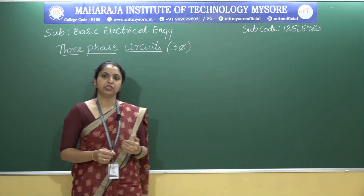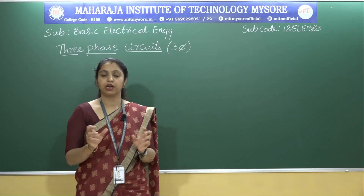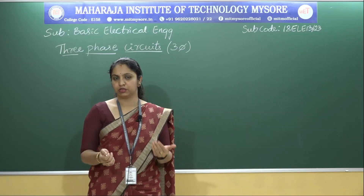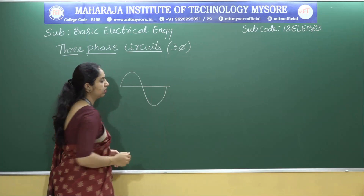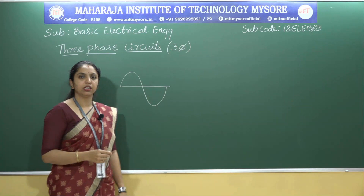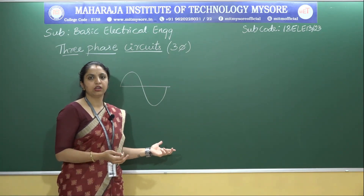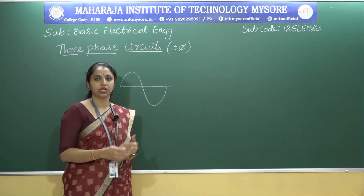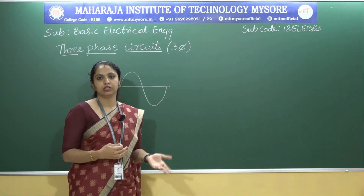As you have seen in the previous session on generation of an alternating quantity, we had a single coil to generate single phase AC — meaning you have only one alternating quantity, which is continuous. Similarly, instead of having a single coil, we can have three windings or three coils to generate more power, which is suitable for AC motors.